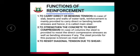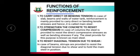The third function of reinforcement is to resist diagonal tension due to shear. In the case of beams, stirrups are provided to resist diagonal tension due to shear force, and to hold the main steel in position.